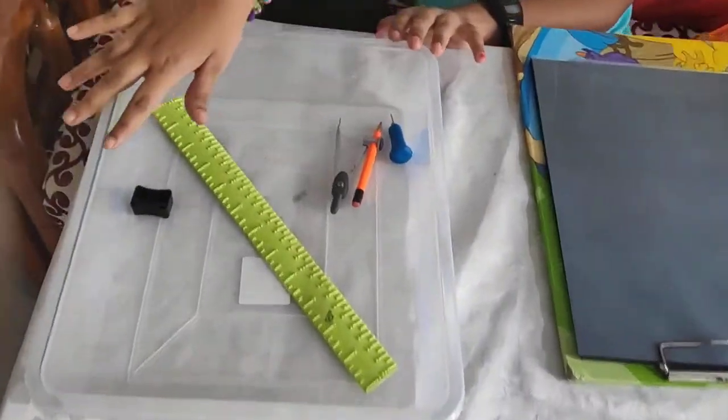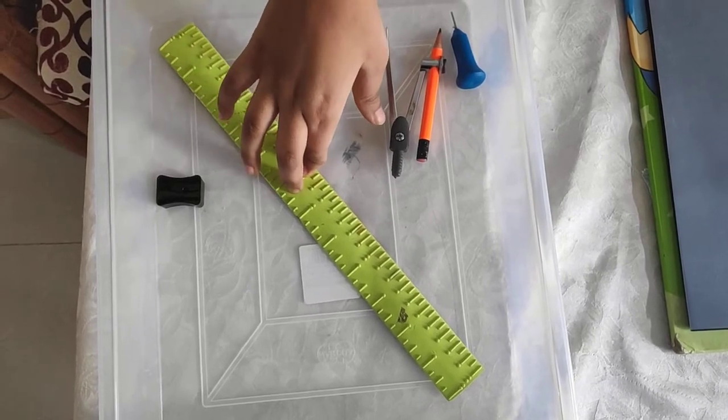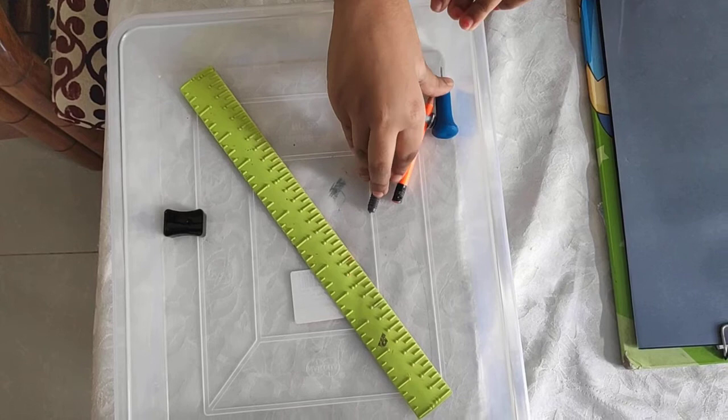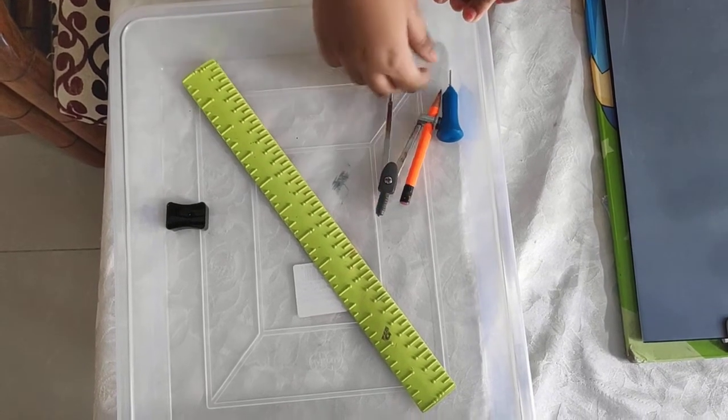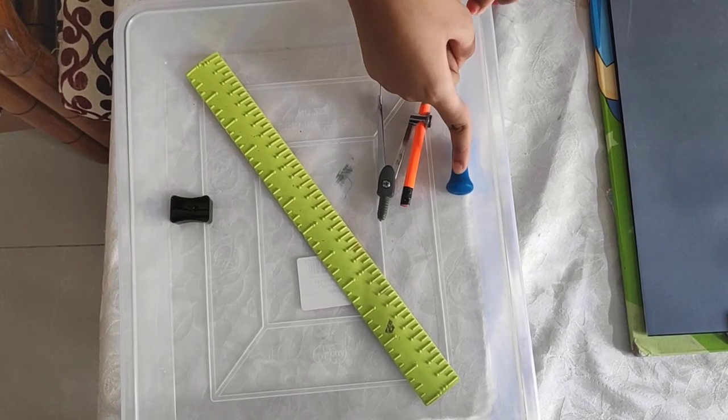These are the instruments which I am going to use to draw. This is a scale. This is a compass which is used to draw arcs and circles. And this is a stylus which is what I am going to use to draw.